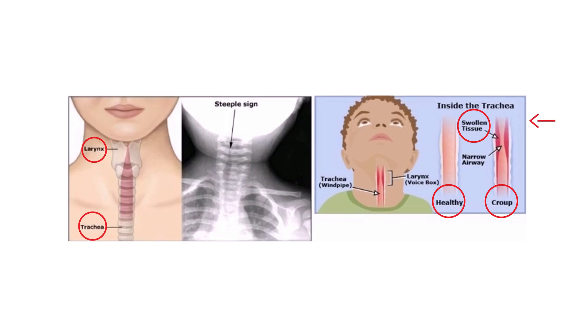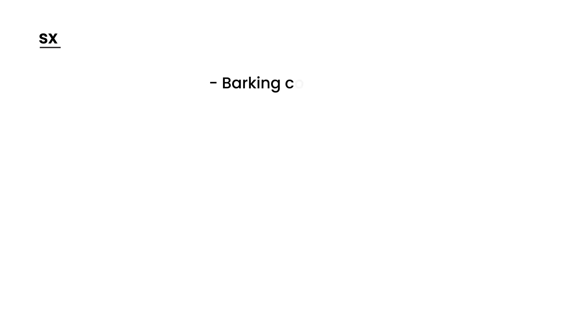What are the symptoms? That swelling and inflammation in the subglottic region can lead to the following symptoms. You get this barking cough that almost sounds like a seal — that's commonly described. You also have something called stridor, which is basically a high-pitched wheezing sound resulting from the turbulent airflow in that narrowed airway.